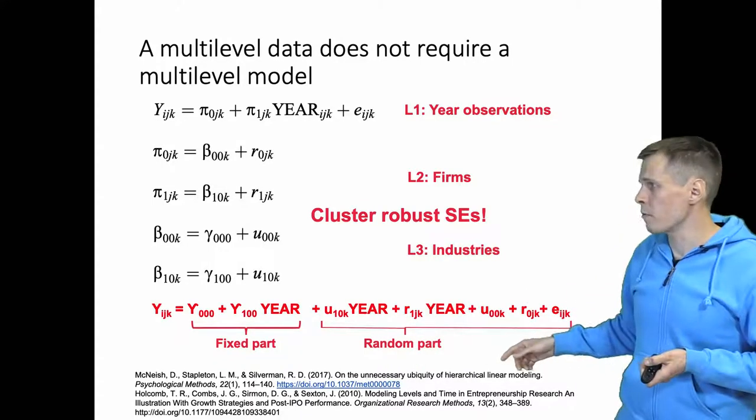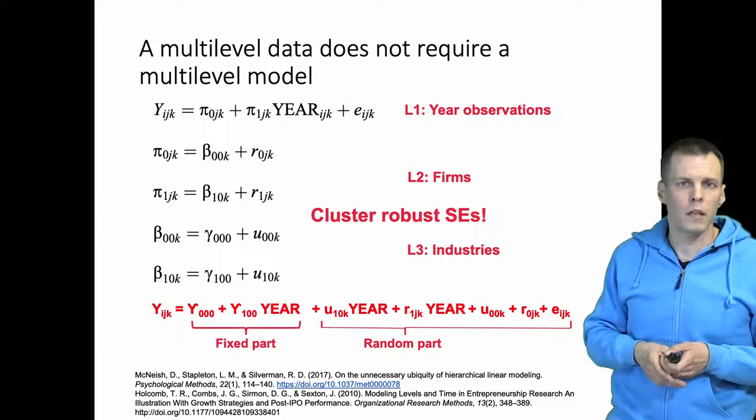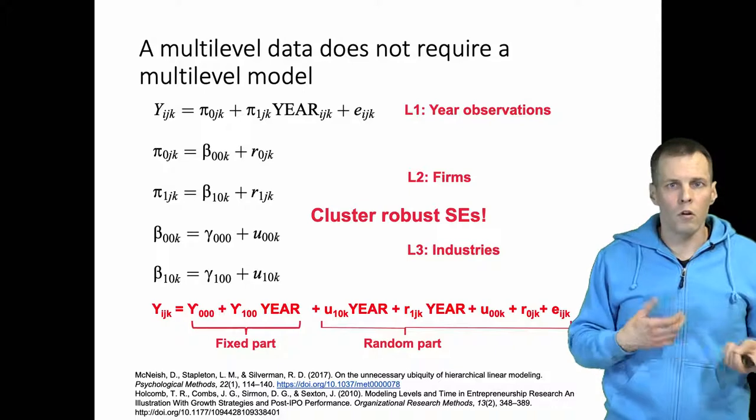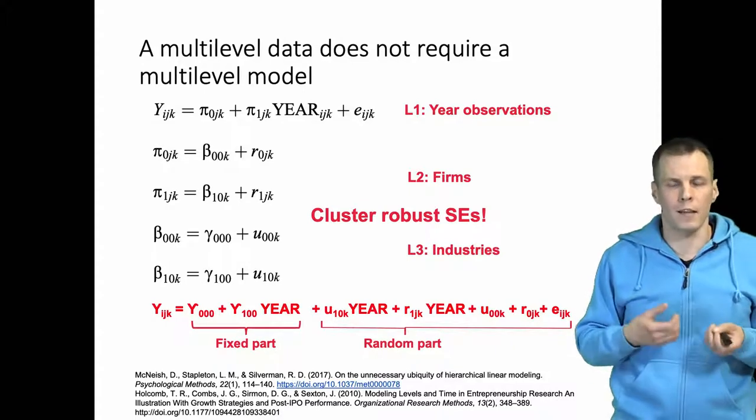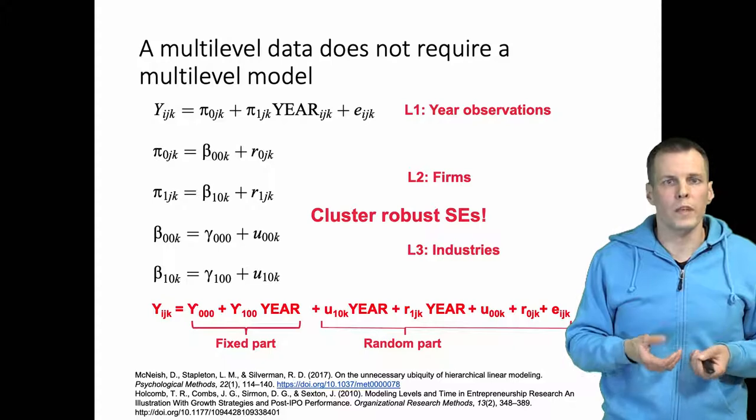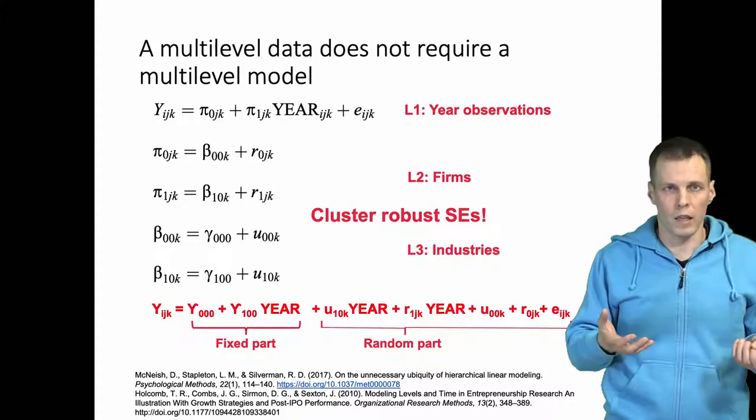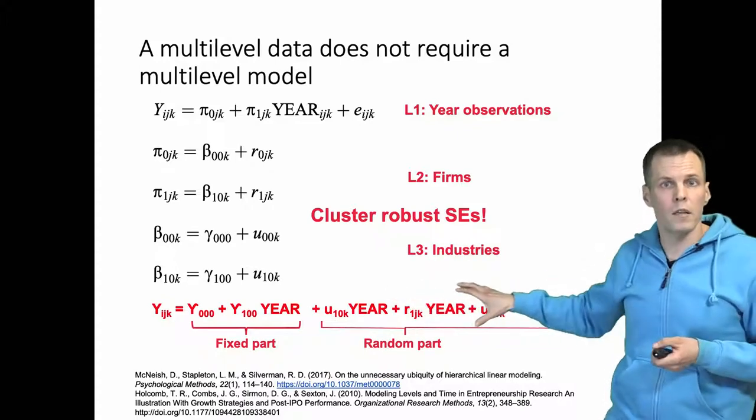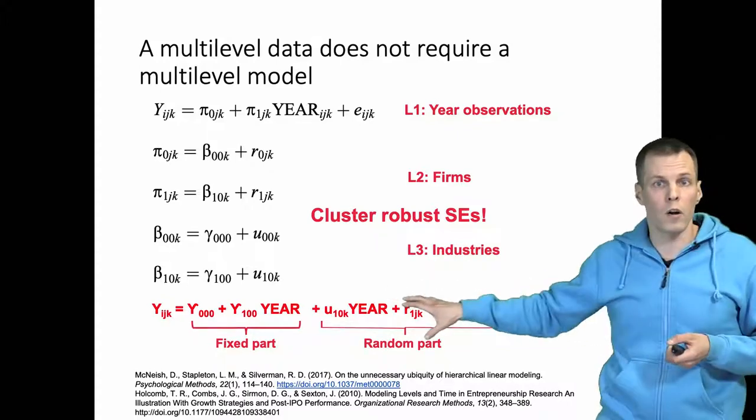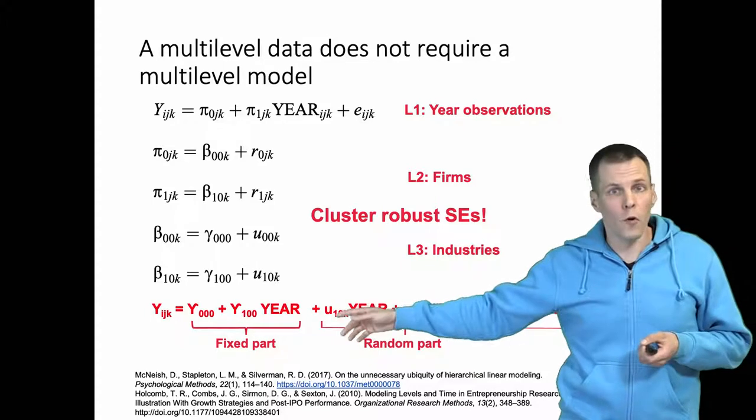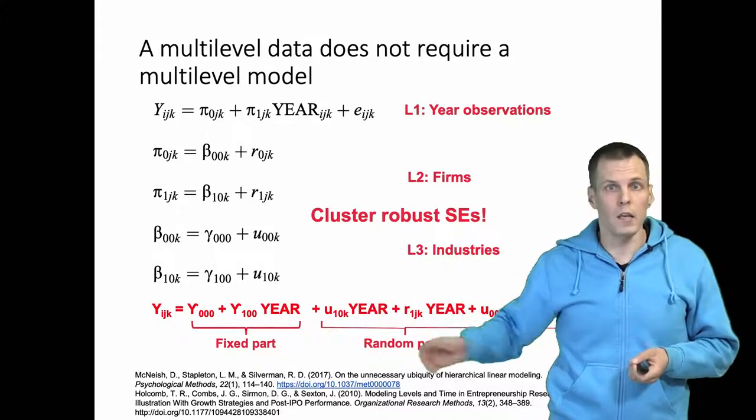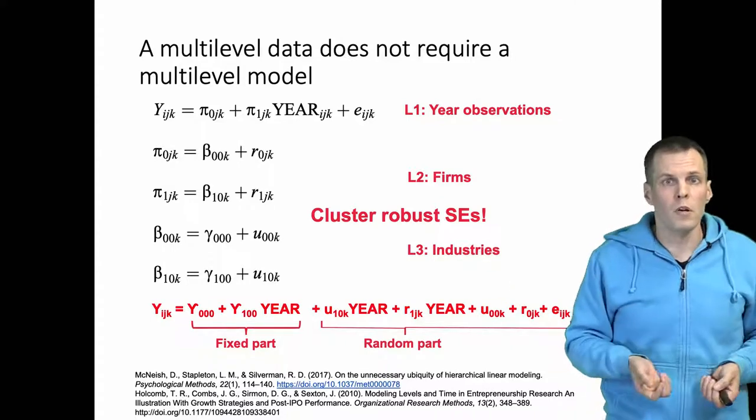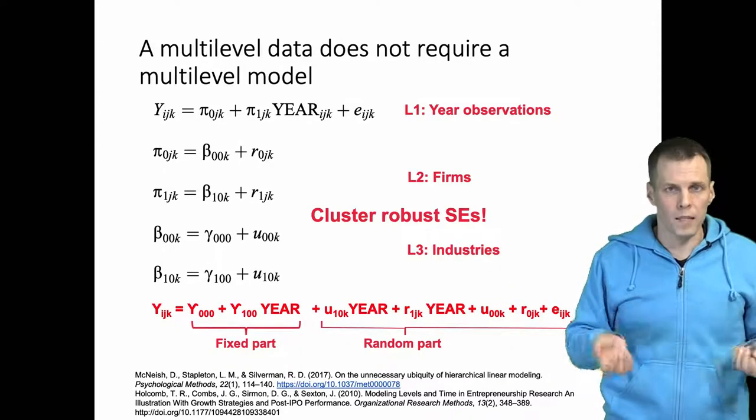There's a nice paper by McNeese in Psychological Methods where he goes through the applications of multilevel modeling in psychology and concludes that most studies that applied multilevel models did so without a real need for the multilevel modeling because they were not looking at these variance components in the random part. They just wanted to control for unobserved effects and they were focused on these fixed effects and that was the interest in the study. In that case cluster robust standard errors does its job, in some cases better but at least more easily.